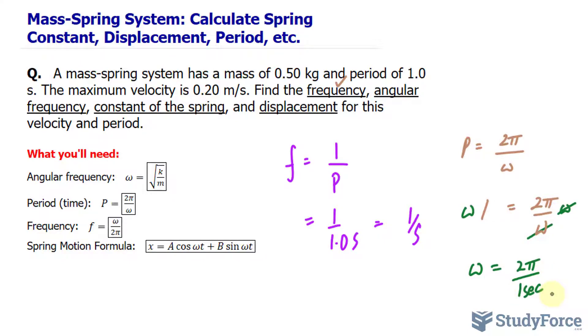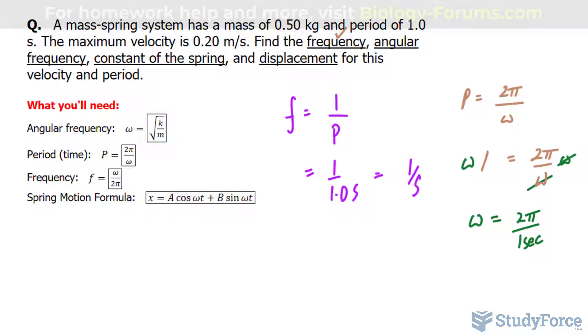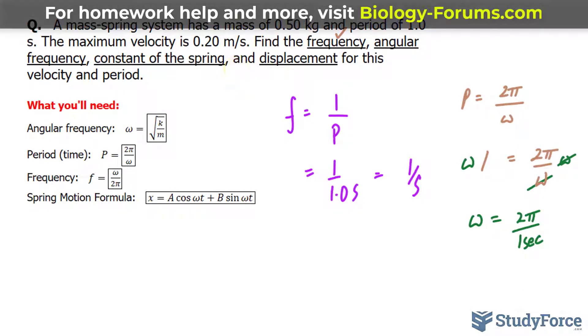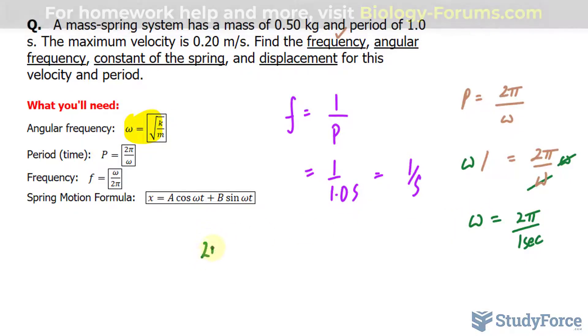Using what we just figured out, we can now find the constant of the spring using this relationship. Remember, the angular frequency is 2π over 1 second, and that equals the square root of k, which represents the constant of the spring, over the mass being 0.50.